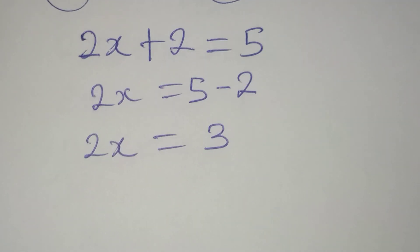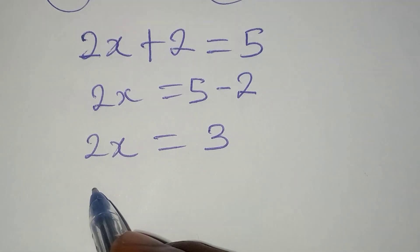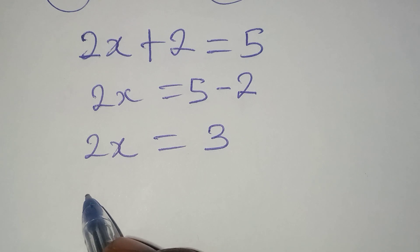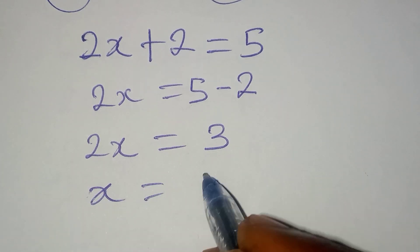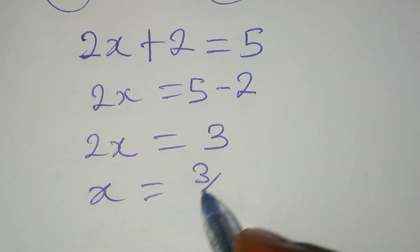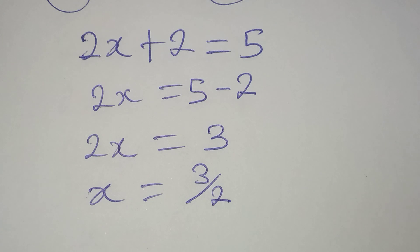Remember that we are looking for the value of x. So our x will be equal to 3 over 2 — that is, dividing both sides by the coefficient of x.